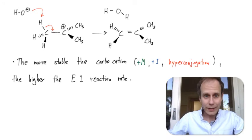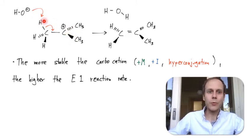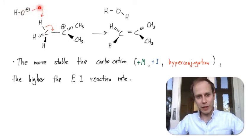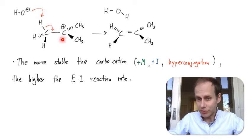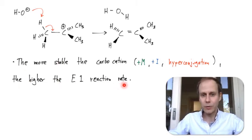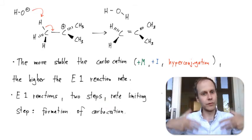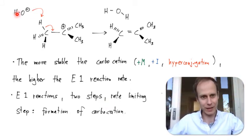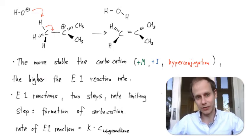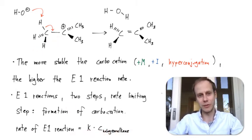Since the carbocation formation is the rate-determining step, the rate of the base's attack on the hydrogen is determined by the stability of the carbocation. That stability can come from mesomeric, inductive, or hyperconjugation effects. The more stable the carbocation, the higher the E1 elimination reaction rate will be. E1 reactions are two-step reactions: first the carbocation is formed, then the base can attack. Just like in SN1, the rate depends only on the concentration of the halogeno alkane that forms the carbocation.